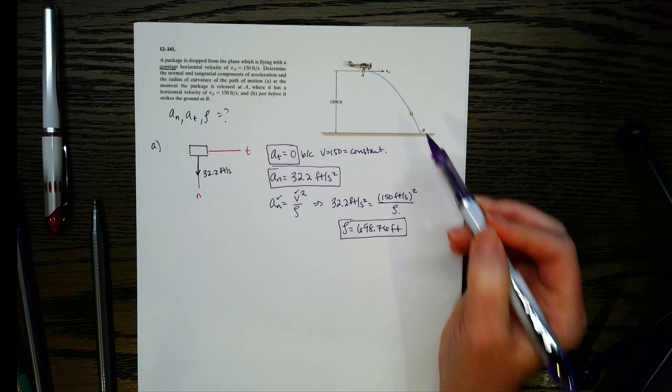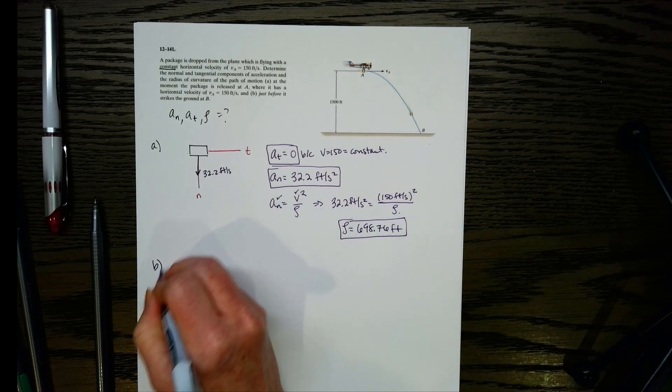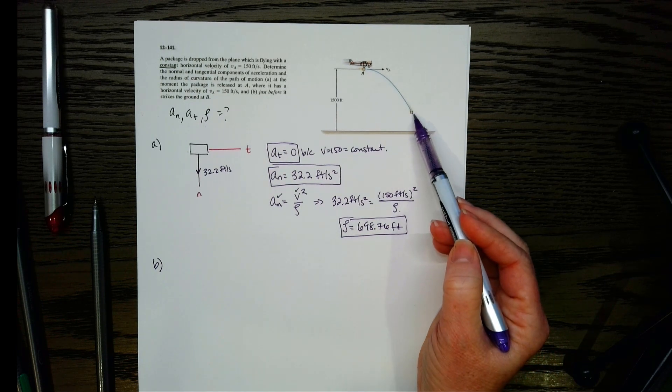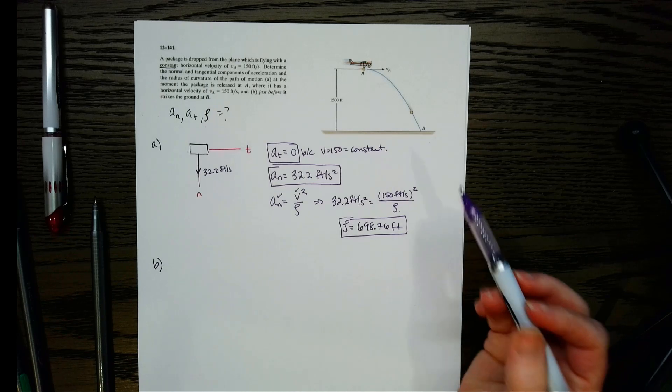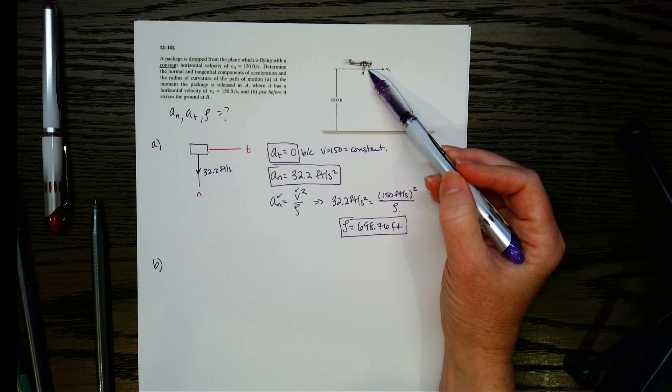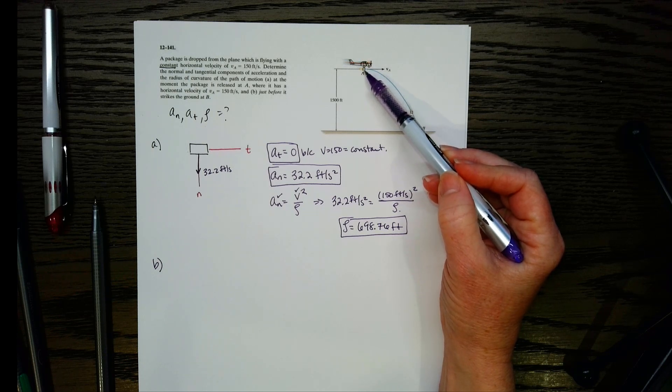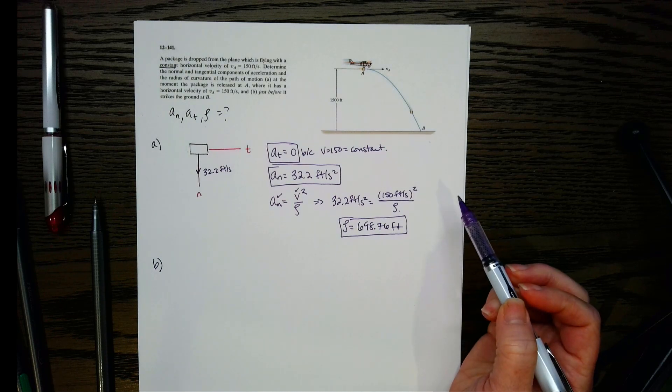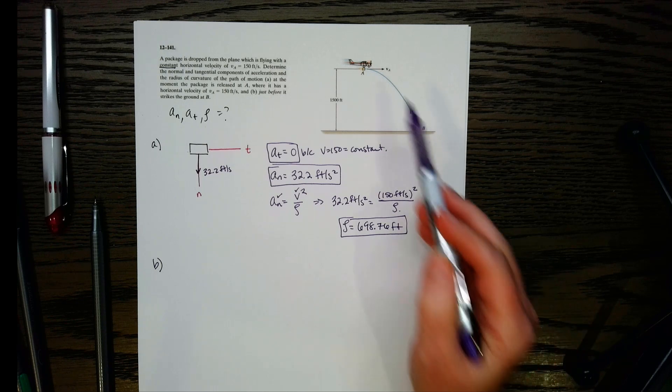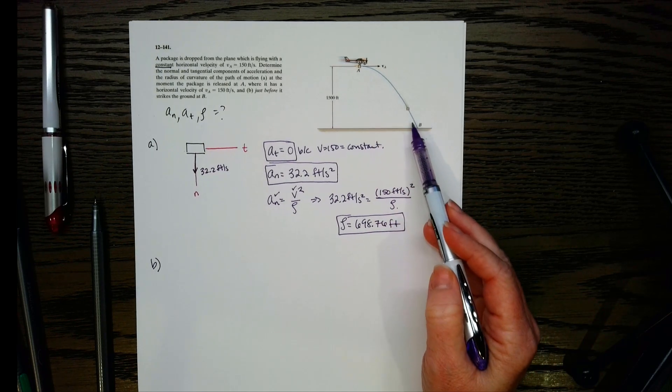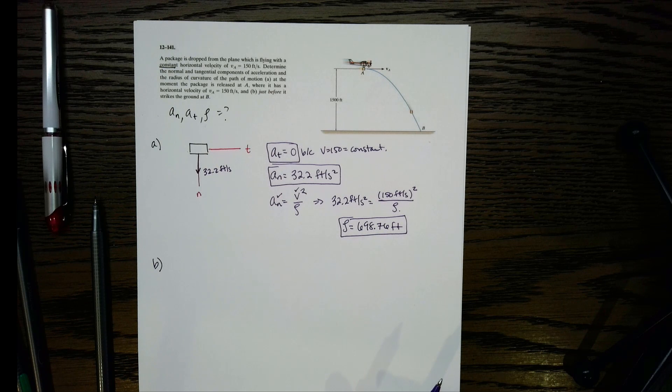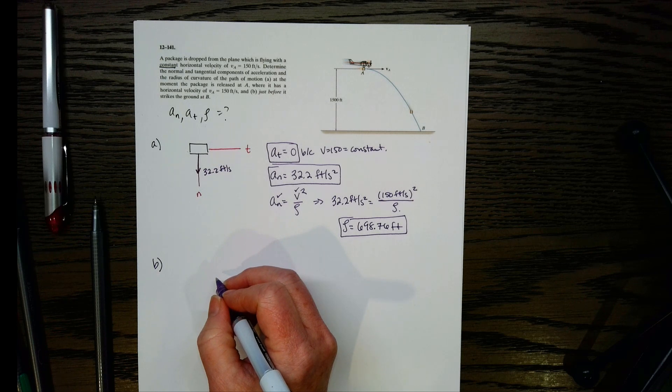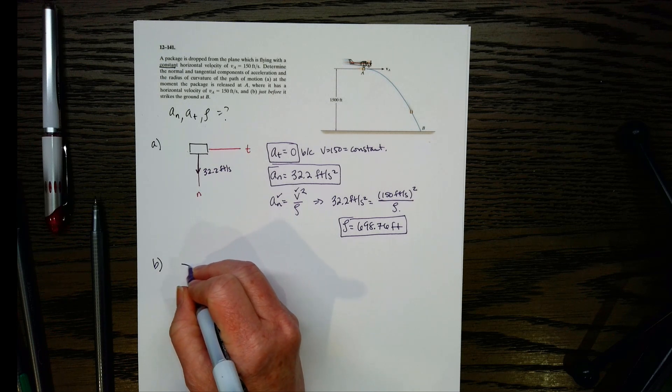Now the next one, we got to go to B down here right before it hits. So this one will be a little bit different. Now remember, we're measuring the motion of the package. Initially when it drops out at A, the package is moving along with the plane, so the package had the velocity of 150. Down here, do we still have that? Is that still going to be the magnitude of our speed? Probably not, because it's followed this path. We've had acceleration of gravity on it. So we need to actually calculate the new velocity.